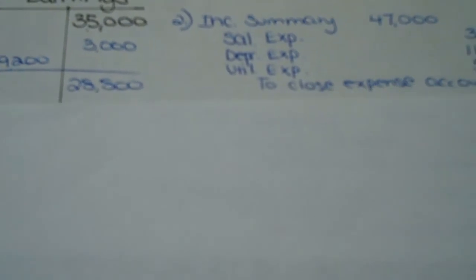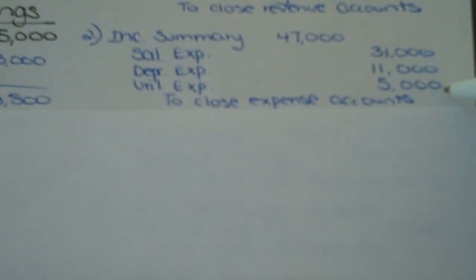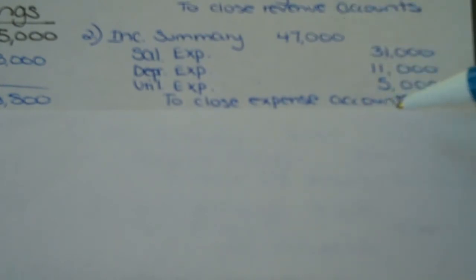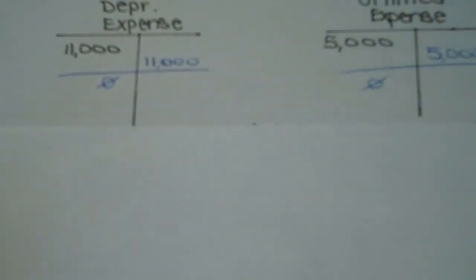Let's go ahead on to closing our expense accounts. We had three expense accounts in this journal entry: salaries, depreciation, and utilities. These balance amounts were given. Since expense accounts normally have a debit balance, we have to credit the full amount to get it to zero. The offset is income summary, which summarizes a company's revenue and expenses for the period. Now if we look at our T-account for our expenses, you can see after we post the closing journal entries, the balance is now zero — which again is our goal.